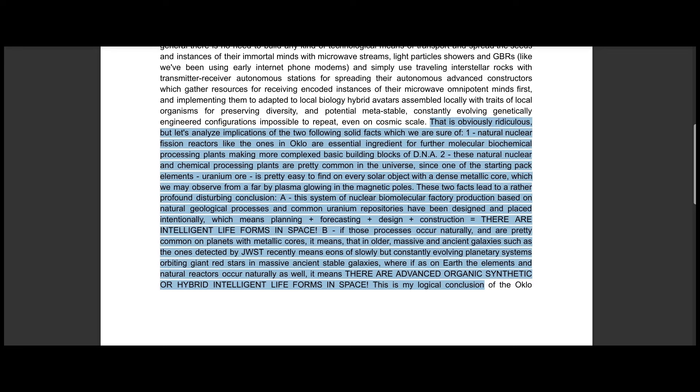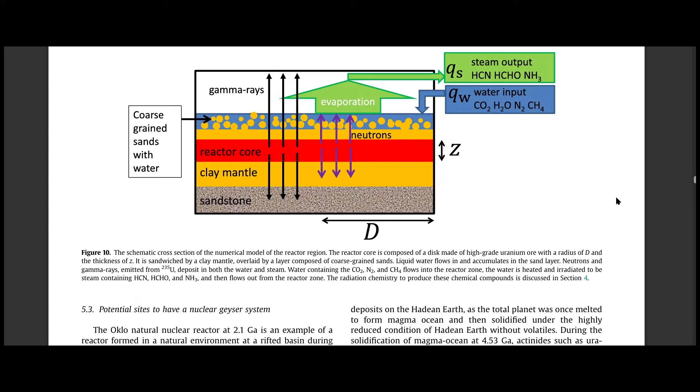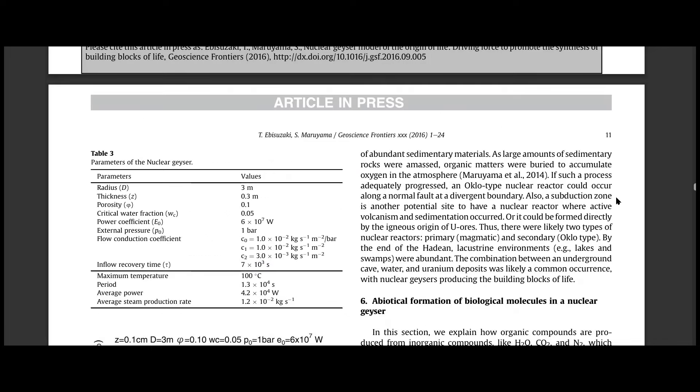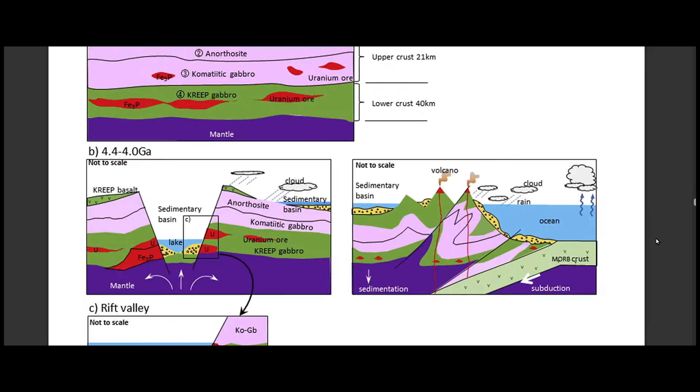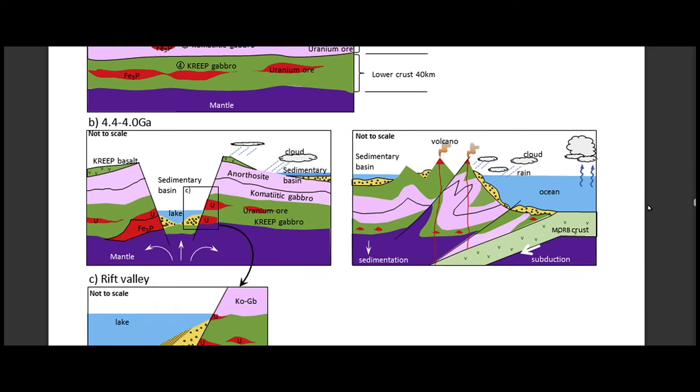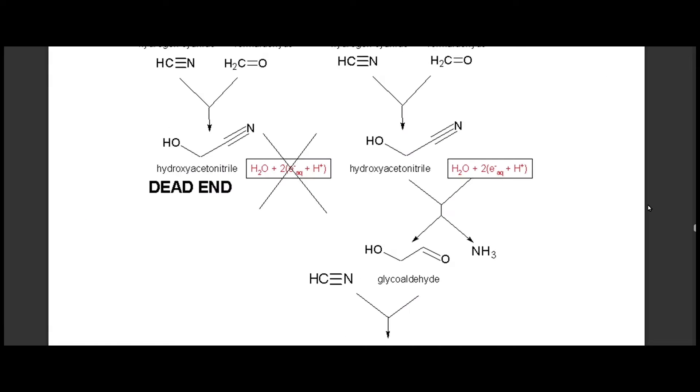That is obviously ridiculous, but let's analyze implications of the two following solid facts which we are sure of: One, natural nuclear fission reactors like the ones in Oklo are essential ingredients for further molecular biochemical processing plants making more complex basic building blocks of DNA. These natural nuclear and chemical processing plants are pretty common in the universe.